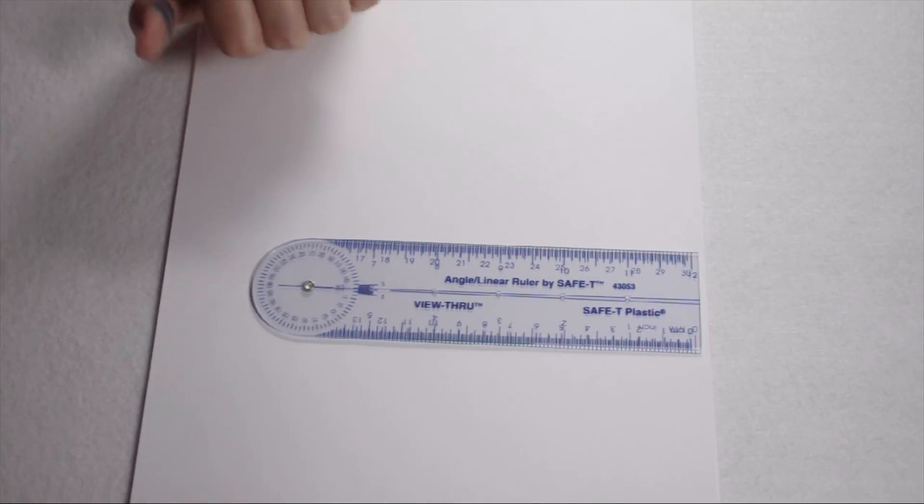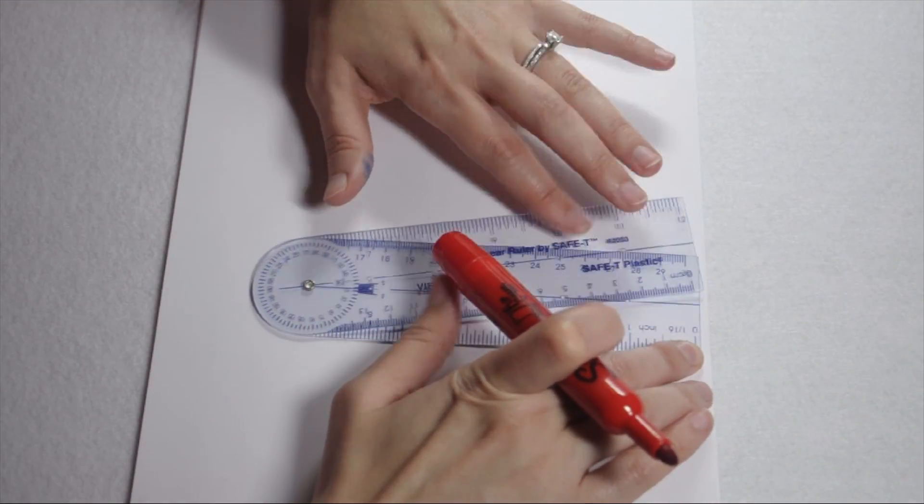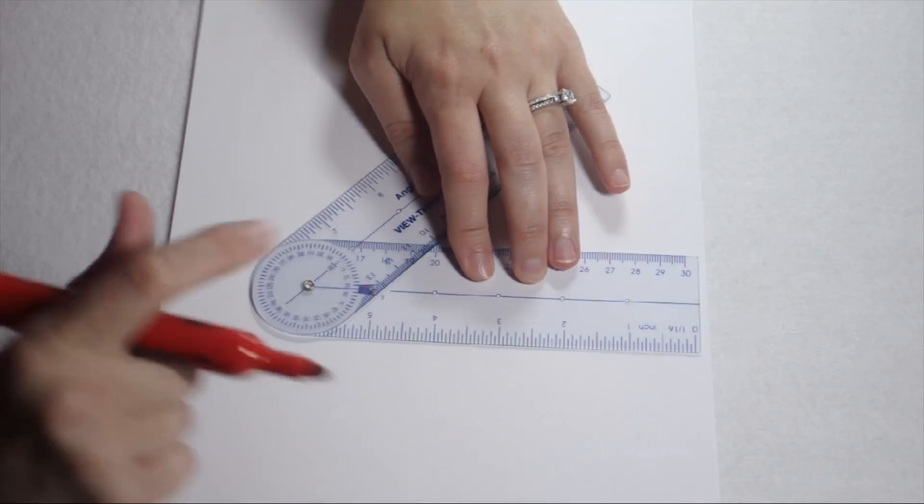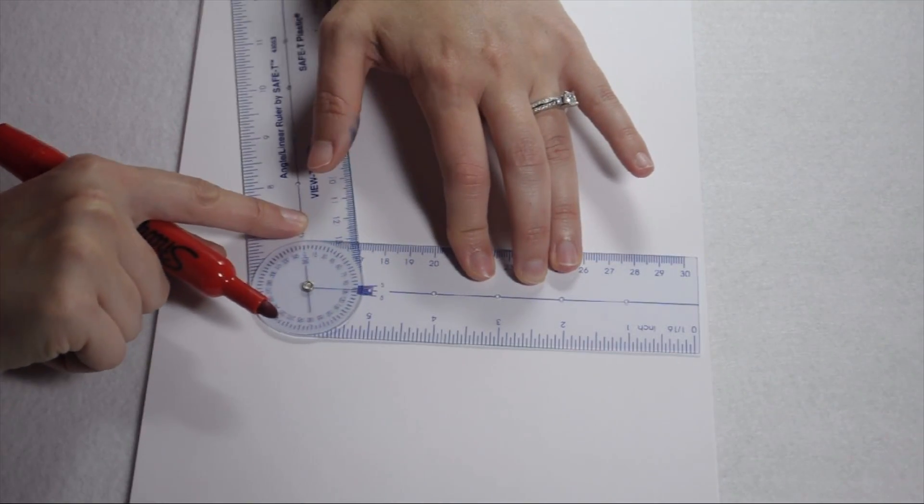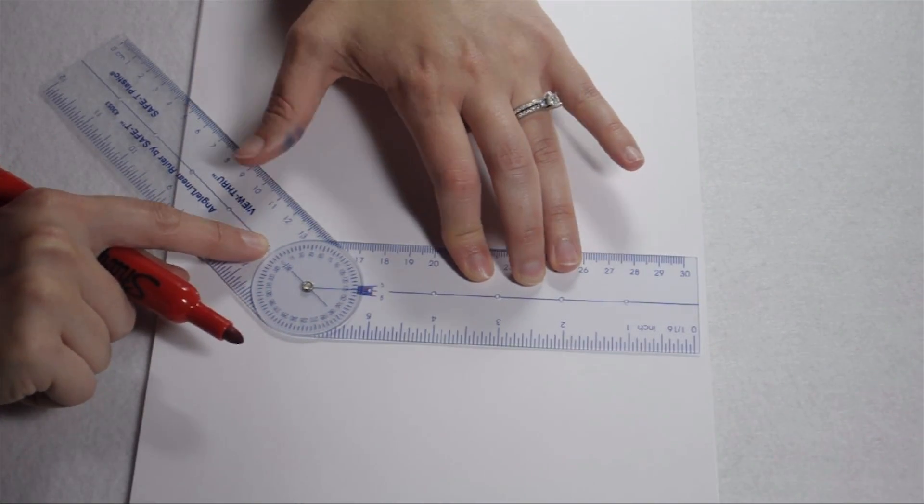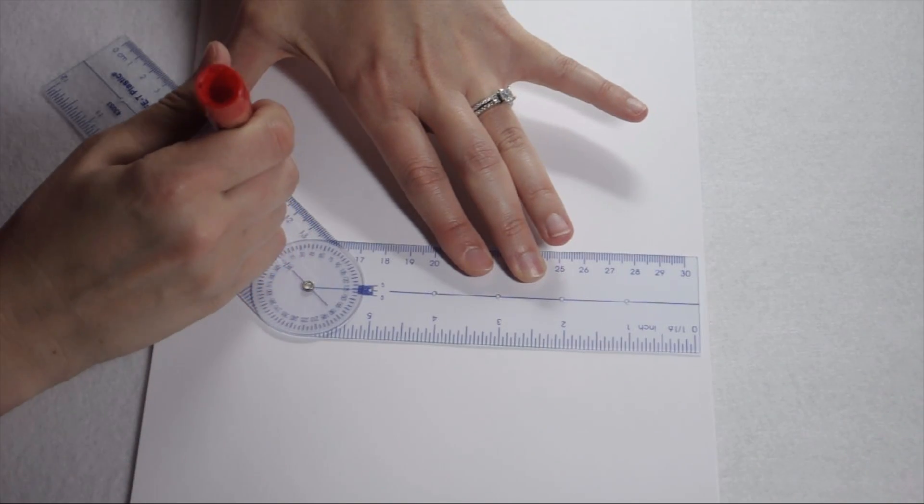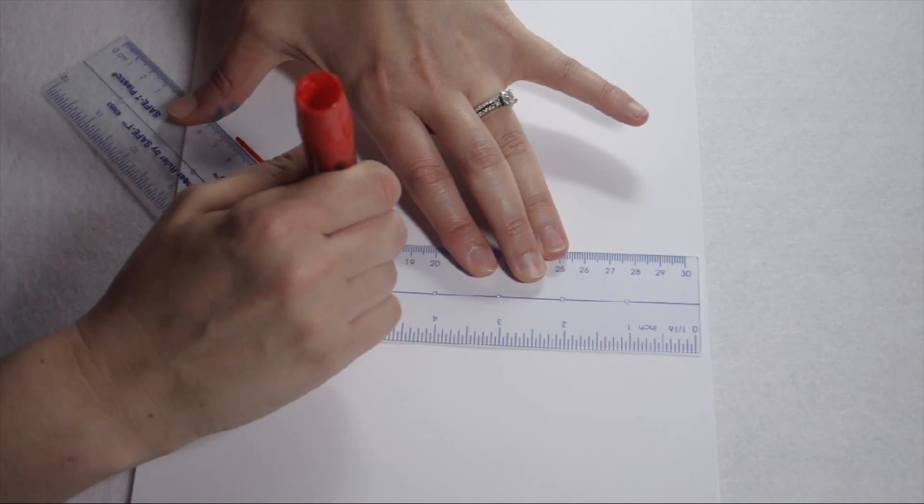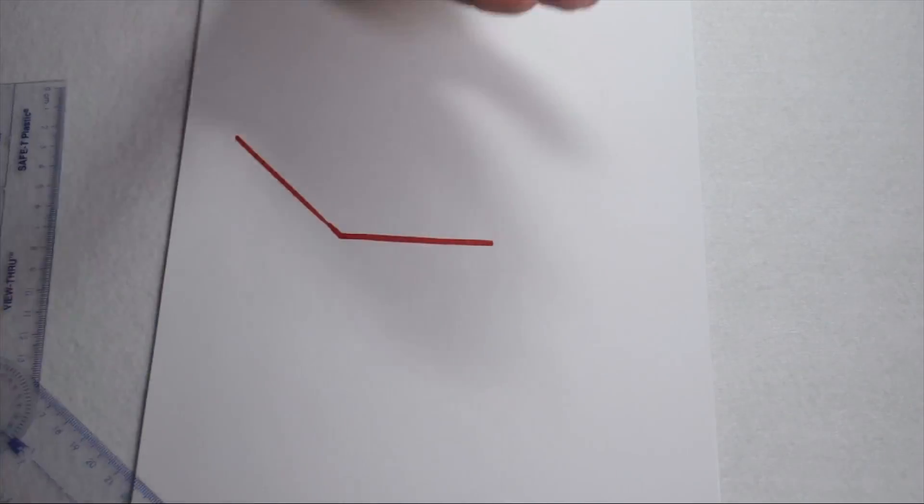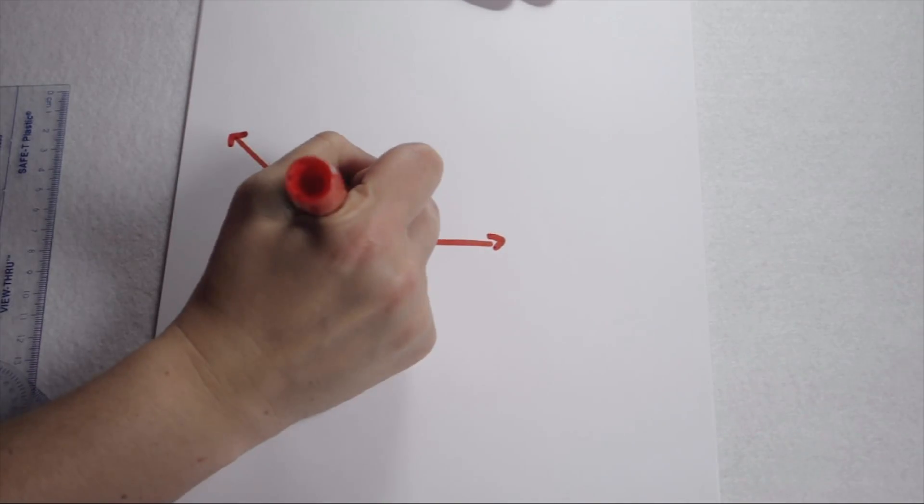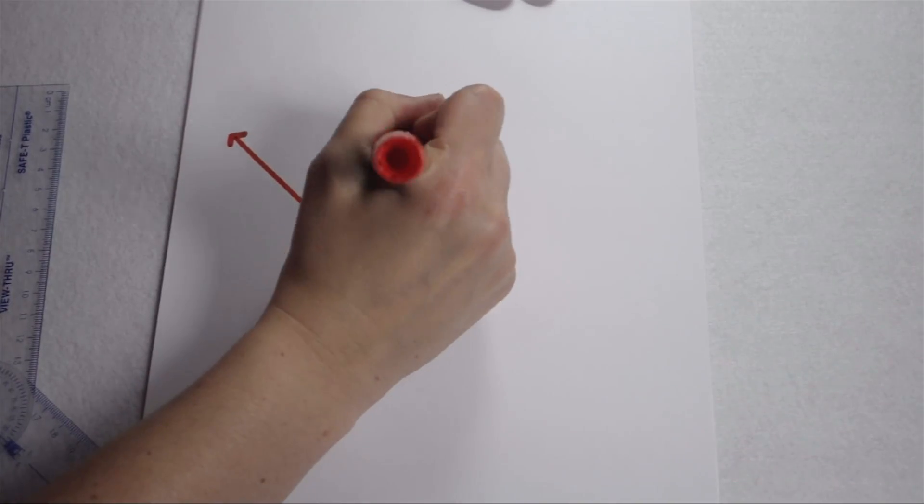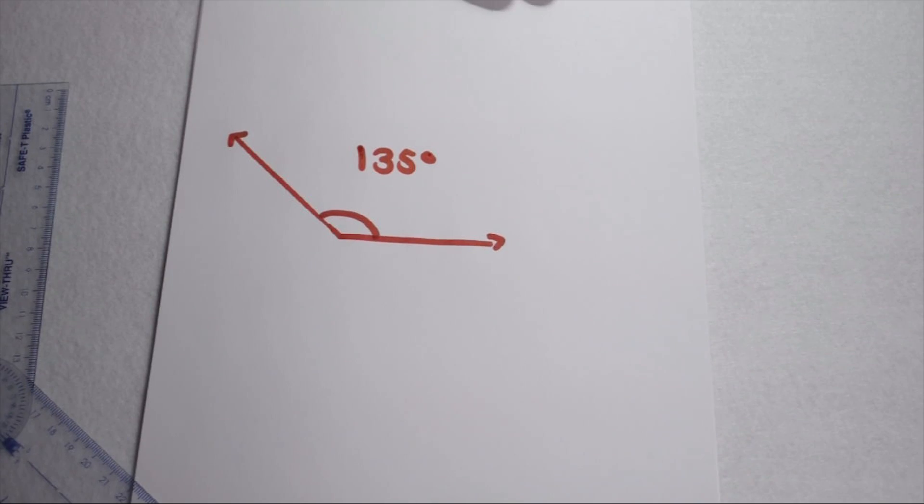To draw a 135 degree obtuse angle, we're going to do the same thing. We're going to open our top leg and keep rotating until we hit 135. So again, we can simply hold our angle ruler down and trace along the inside and label it to show we measured the 135 degrees for the obtuse angle.